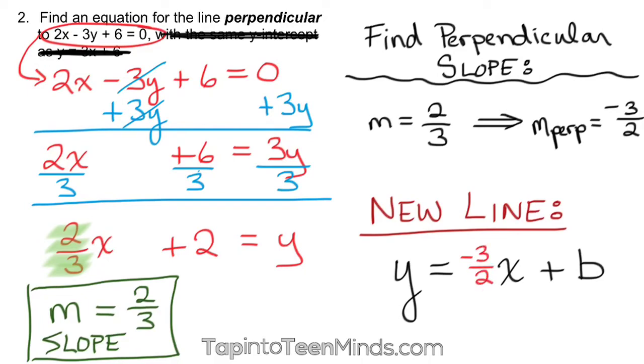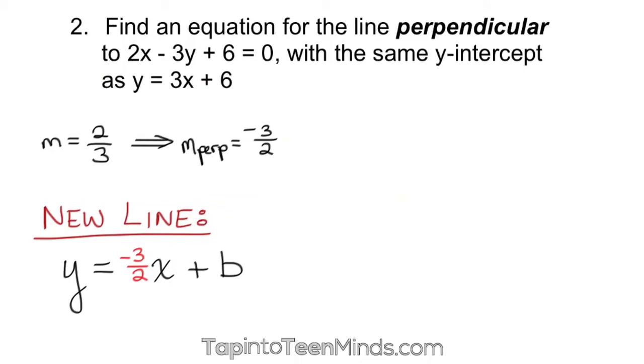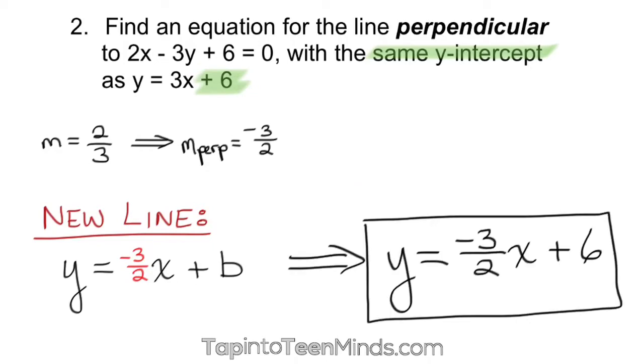And we now need to focus on what is our y-intercept of this line. However, if we go back to the original question, we know that the new line should have the same y-intercept as y = 3x + 6. By looking at this, we can see that it is in slope y-intercept form, and therefore, we know our y-intercept should be positive 6. And therefore, we have our new line, y = -3/2x + 6.